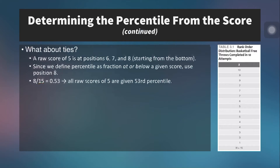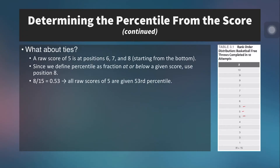If there's a tie — for instance, three fives in a row — we still count all scores at or below that value. Counting up: 8 scores fall at or below 5. So 8 divided by 15 is 0.53, meaning a score of 5 is the 53rd percentile. All three individuals who scored 5 out of 10 free throws are considered to be in the 53rd percentile.